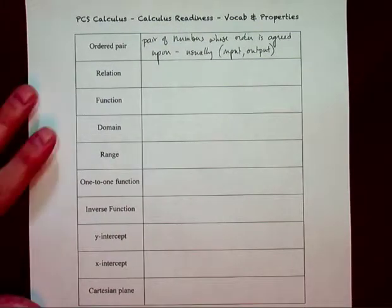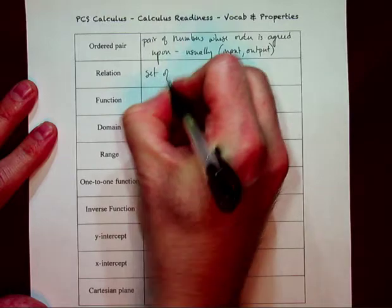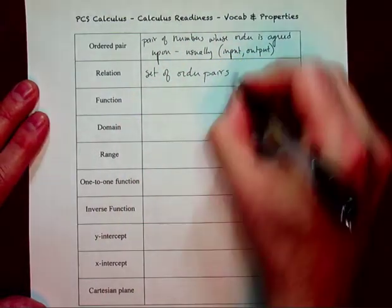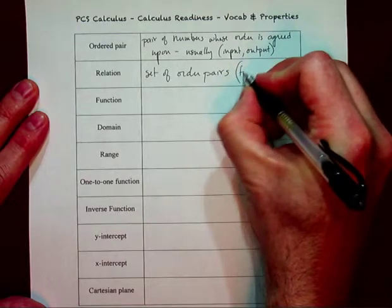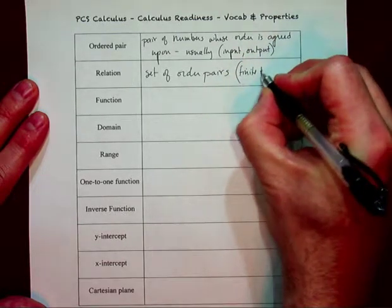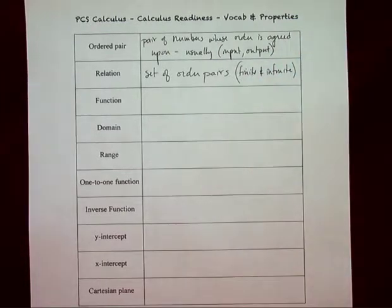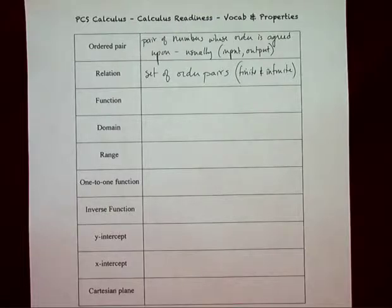A relation is a set of ordered pairs. As we talked about in class, there are finite ordered pairs and there are infinite ordered pairs. Infinite ordered pairs are basically equations — there is an infinite set of ordered pairs I can't list out by hand, but I can express them. They all have the form (x, x+2) or whatever.